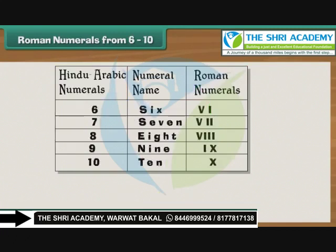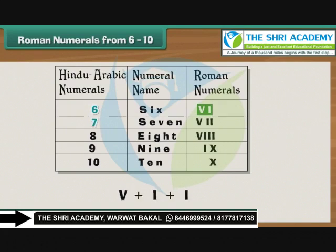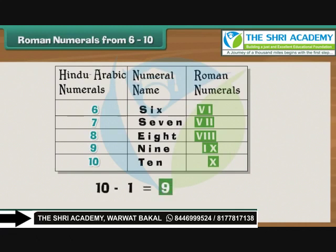Roman numerals from 6 to 10. We know that 6 can be expressed as 5 plus 1, therefore 6 is written as VI, meaning 5 plus 1. Similarly, 7 is written as VII, meaning 5 plus 2. 8 is VIII. 9 is IX, and 10 is X. Since 9 is 10 minus 1, it is written as IX, meaning 1 less than 10.